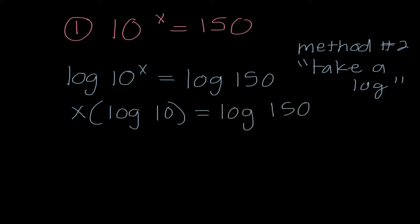We learned in our last lecture that if I have an exponent, I can bring it out in front. So I have X times log of 10 equals the log of 150. I know that the log of 10 is actually just equal to 1 because when our base and the number we are taking the logarithm of are the same, that it's always equal to 1. 1 times X is X.